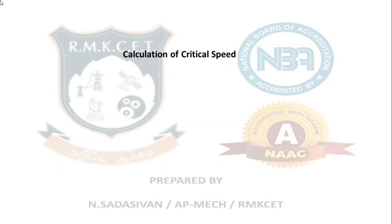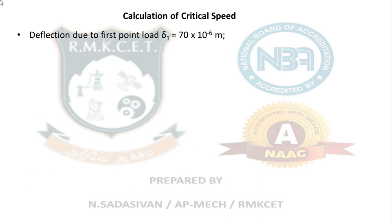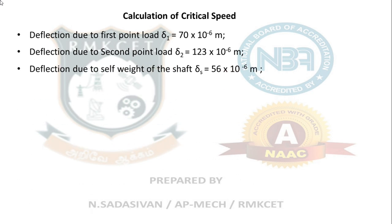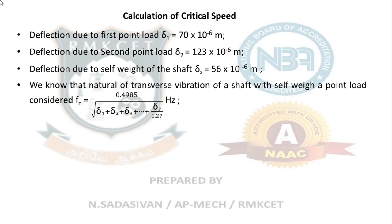Now calculate the critical speed using Duncan's formula. The natural frequency of transverse vibration with self-weight considered is: f_n = 0.4985 / √(δ₁ + δ₂ + δ_S/1.27). Substituting: δ₁ = 70×10⁻⁶, δ₂ = 123×10⁻⁶, δ_S = 56×10⁻⁶ divided by 1.27.